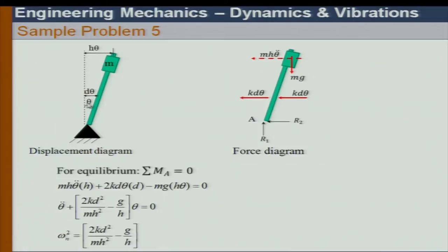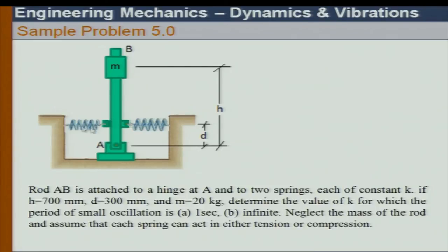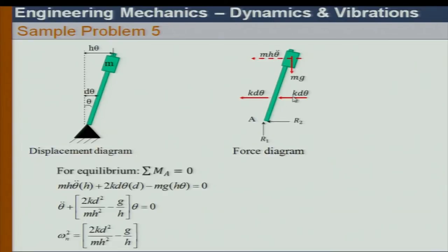Let us get the equation of motion. Giving a small oscillation theta: one spring is stretched (tension, acting outward) and one is compressed (acting toward the body), but the net effect is leftward. Here we have K·d·theta and K·d·theta. The inertia force from the lumped mass at height H: displacement is H·theta, so the translational inertia force is M·H·thetä. We also have M·g, which produces a disturbing torque that will never be balanced by the springs.